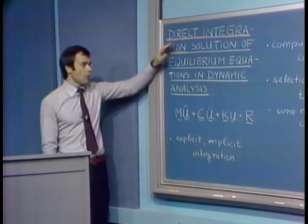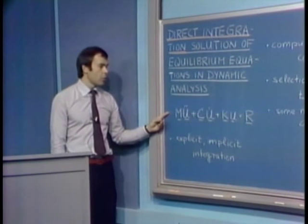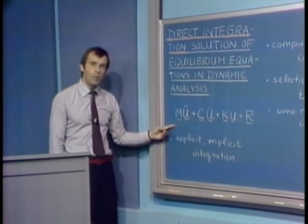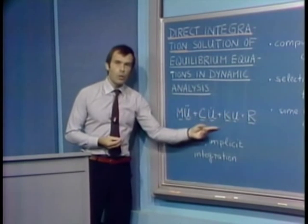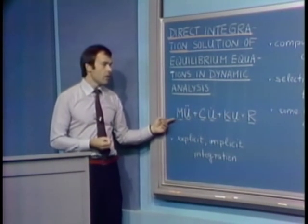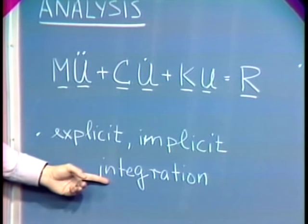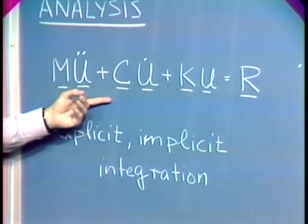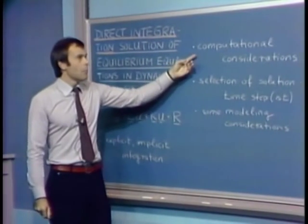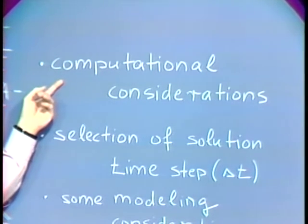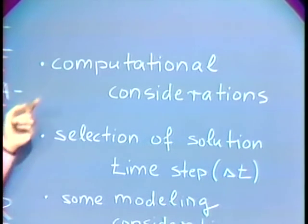By direct integration, we mean that we integrate these equations directly without a transformation of these equations into a different form prior to the integration. In mode superposition analysis, we actually transform these equations first and then integrate the response. The procedures I want to discuss are explicit and implicit integration procedures that directly operate on these equations, along with some computational considerations regarding the number of operations and costs involved.